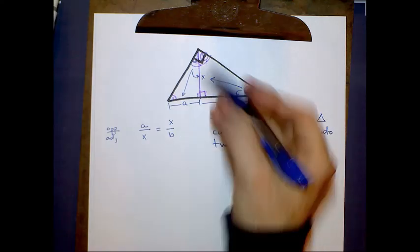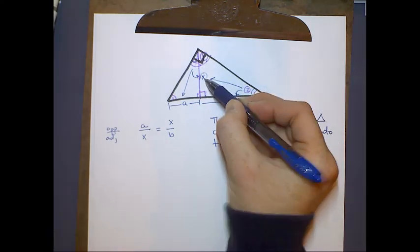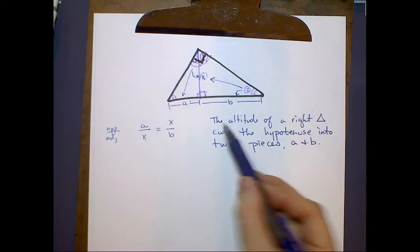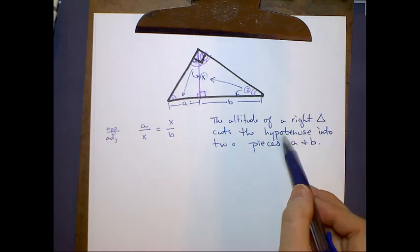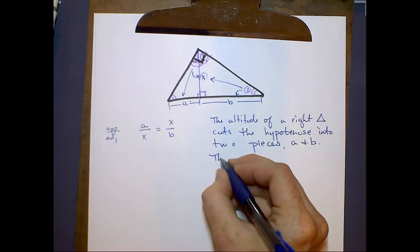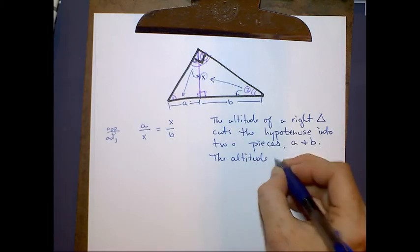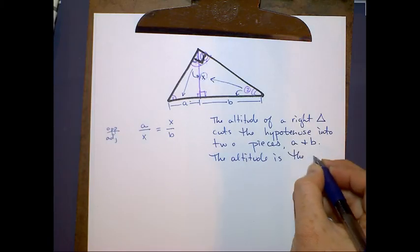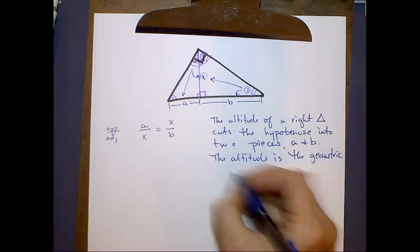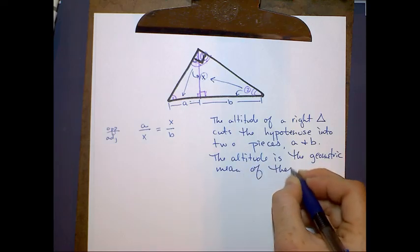So basically what that means is that the altitude of any right triangle is the geometric mean of these two pieces. So in other words, the altitude of a right triangle cuts the hypotenuse into two pieces A and B and the altitude is the geometric mean of these two pieces.